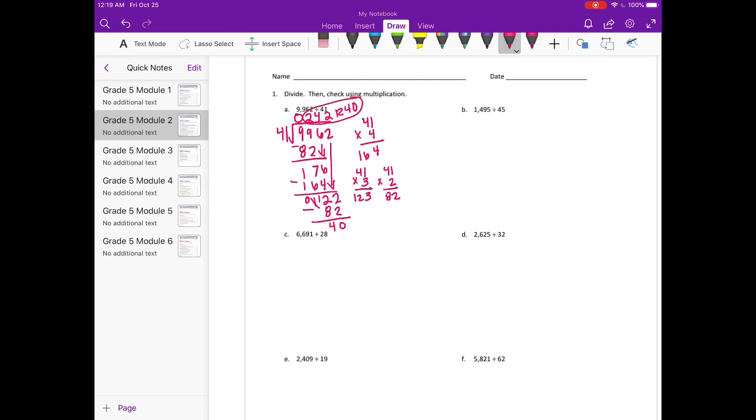And our check would be 41 times 242. And that is, I'll use my calculator to check, 41 times 242 is 9922. And 9922 plus 40 would be equal to 9962, which is what we started with. So that does check out.